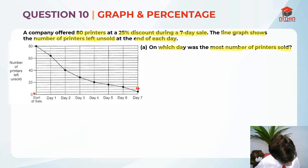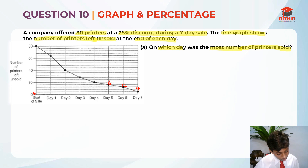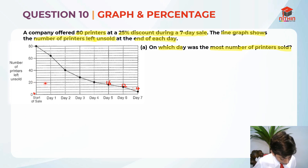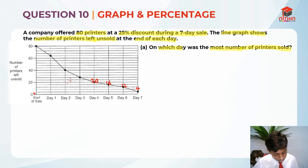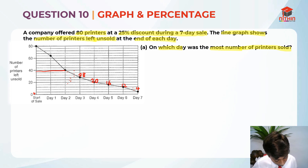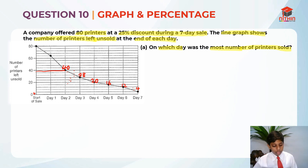Now let's label the graph values. Day 7 is 4. Then going up: 8, 12. One space up is 16. Then 20 here — straight to 20. Two spaces up gives us 28. Then diagonal to 40. Then up to 60, and one space above 60 is 64. And 80 is at the start of the sale.